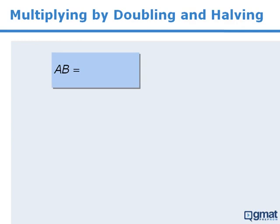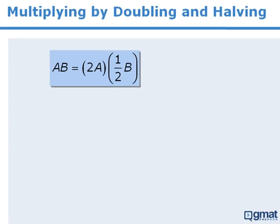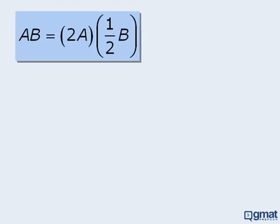Notice that if we multiply A times B, this product will be equal to the product of 2A times ½B. These two values are equal, since the 2 and the ½ here multiply to get 1, which makes the right-hand side equal to A times B.